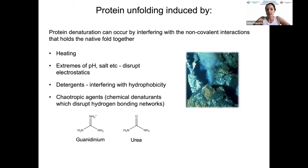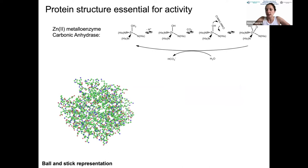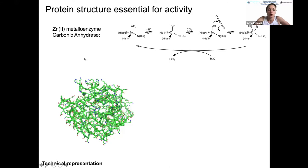Why are such complex protein structures essential? Consider carbonic anhydrase: in ball-and-stick form every atom is visible, but in cartoon representation you see the backbone and side chains clearly with beta sheets and alpha helical domains. In space-filling representation, you see the zinc atom buried in the center of the protein, surrounded by the nitrogens of histidine residues. The protein essentially encapsulates the zinc right in its core.